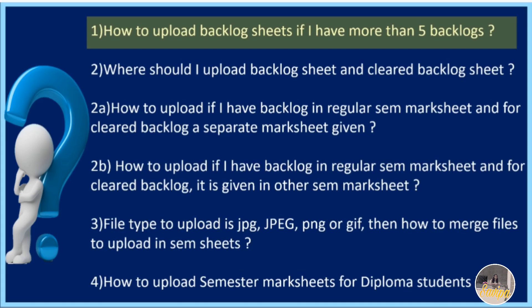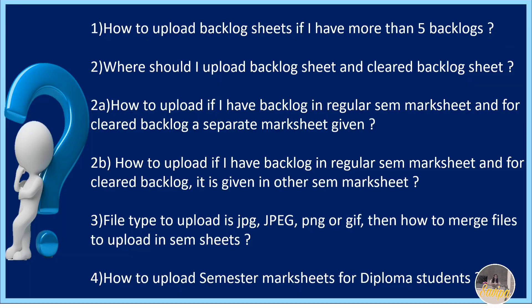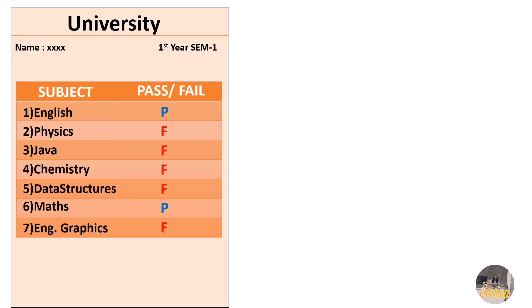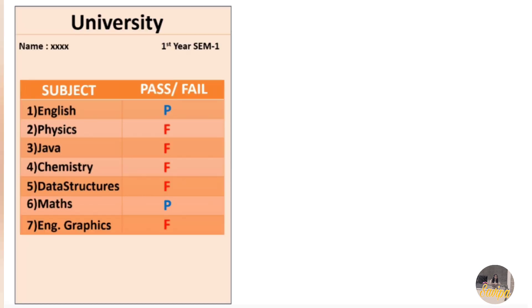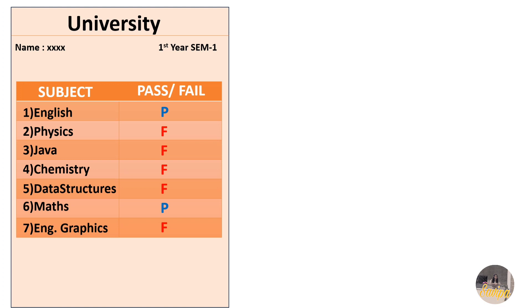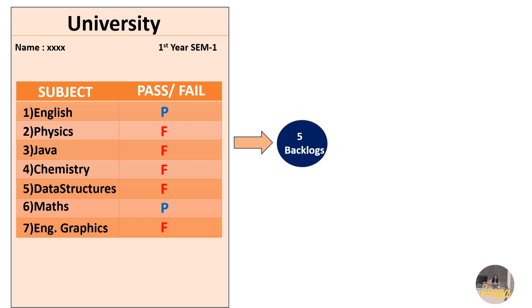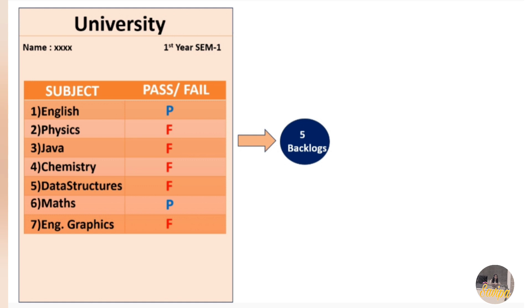Now let us move to the solutions. The first question is: how to upload backlog sheets if I have more than five backlogs? Let us assume this is your first year, first SEM mark sheet. Your subjects are English, Physics, Java, Chemistry, Data Structures, Maths, and Engineering Graphics. You have passed only two subjects and have five backlogs. When uploading task documents, you'll notice Accenture has provided only four fields to upload backlogs. Two scenarios will occur.